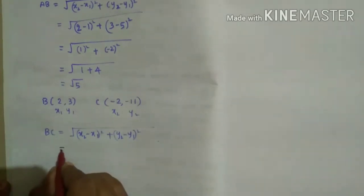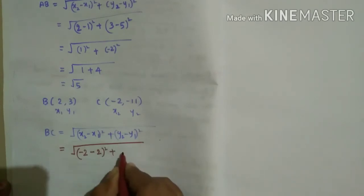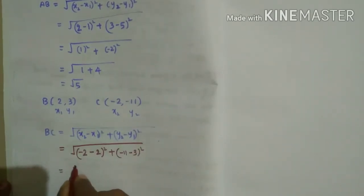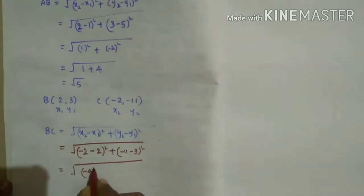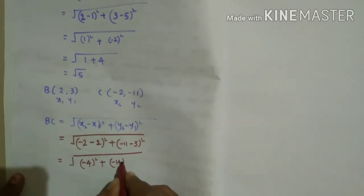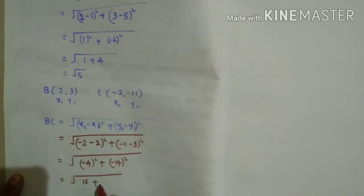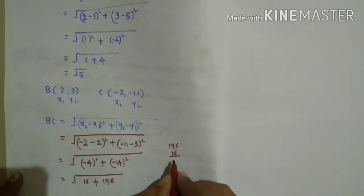Substituting the values: x2 is -2, x1 is 2, so (-2 - 2)² = (-4)² = 16; y2 is -11, y1 is 3, so (-11 - 3)² = (-14)² = 196. Now 196 + 16 gives us BC = √212.